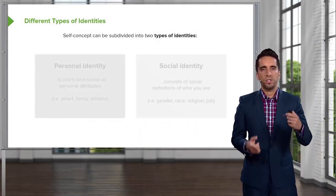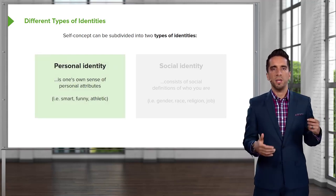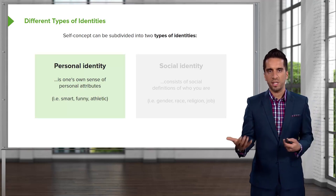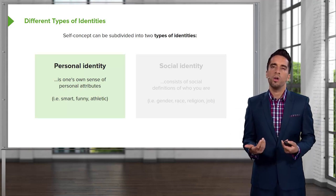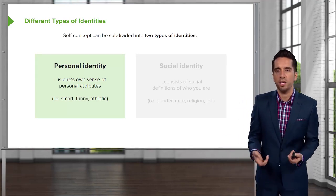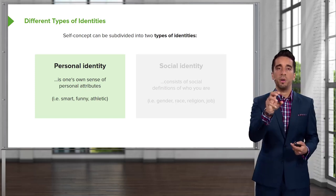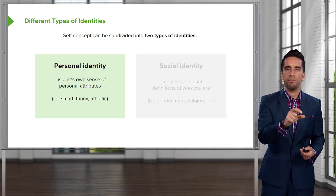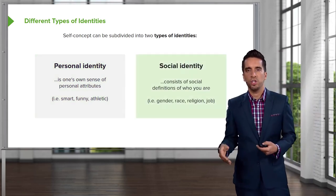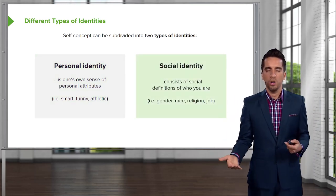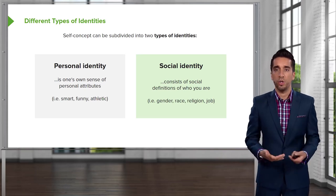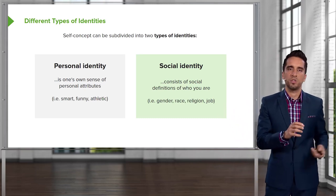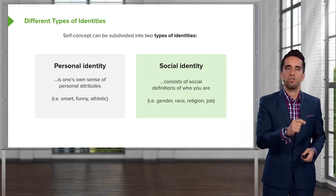Self-concept can be split into two broad bins. The first is personal identity — your own sense of personal attributes. Do you think you're smart? Do you think you're funny? Do you think you're athletic? You're attributing specific attributes to yourself. Versus social identity, which is social definitions of who you are — your gender, race, religion, what job you have. These things define your social self, whereas personal identity is more specific to your personal attributes.